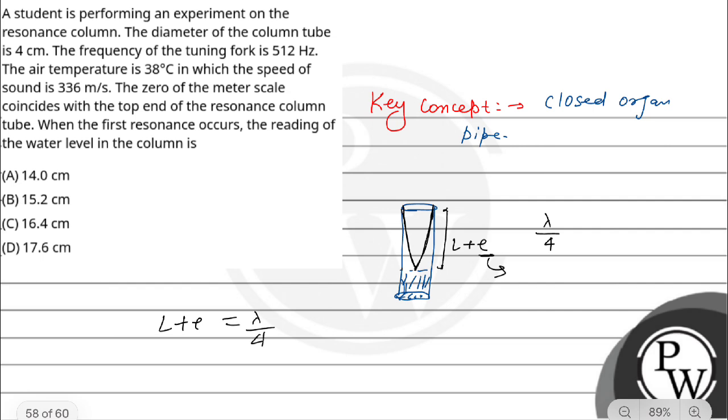We know e equals 0.3 times D, where D is the diameter of the tube. We can find lambda using v = f × lambda, so lambda = v/f. Therefore, we can calculate L.